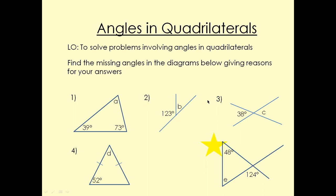Let's have a look at the answers. For this one, the three angles in a triangle add up to 180 degrees. So we add these two angles and take away from 180, and that will give us angle A, which is 68 degrees.